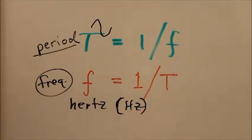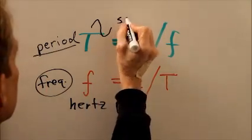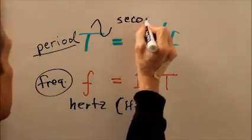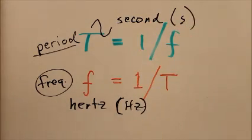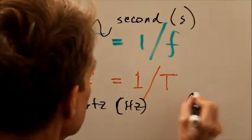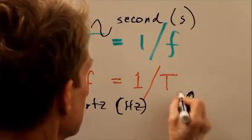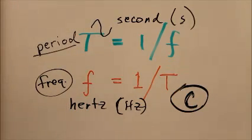The standard unit of period is the second, abbreviated 's'. Hertz is abbreviated 'Hz'. So the period and the frequency are inversely related to one another. The correct choice for this question is C.